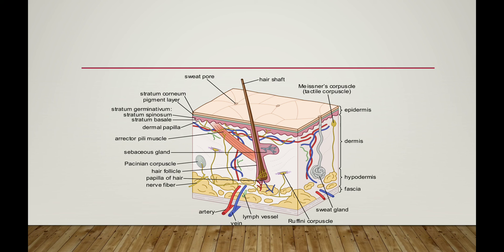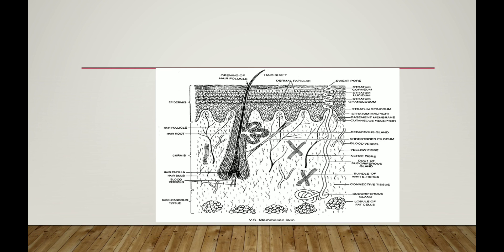Looking at the diagram, it contains sweat pores, hair shaft, and stratum corneum as the outermost layer, followed by stratum granulosum, stratum spinosum, and other epidermal layers. The dermis contains different types of glands — sebaceous glands and sweat glands — as well as hair follicles, nerve fibers, and blood vessels. Meissner's corpuscles, the tactile corpuscles, are responsible for light touch.